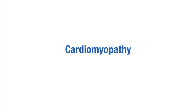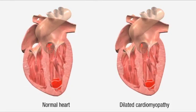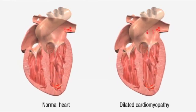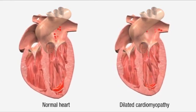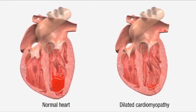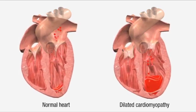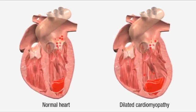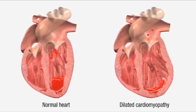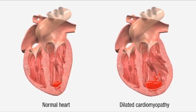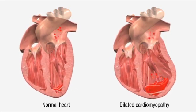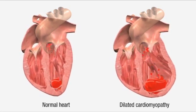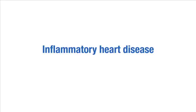Cardiomyopathies are structural and functional abnormalities of the heart muscle. Dilated cardiomyopathy is the most common form, in which the ventricular chamber dilates and the heart muscle wall becomes thinner, reducing the ventricle's ability to pump blood out into the circulation. Other forms of cardiomyopathy will not be discussed in this video.